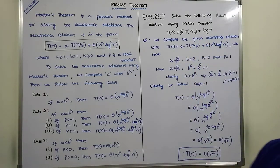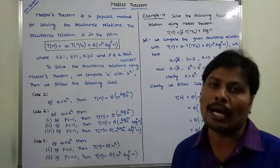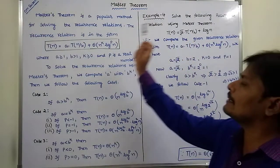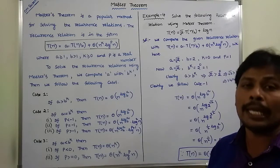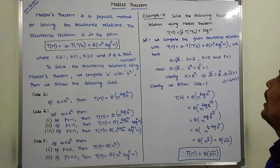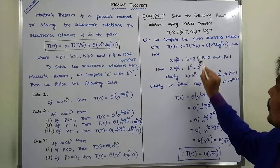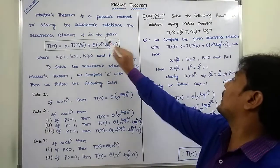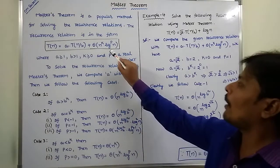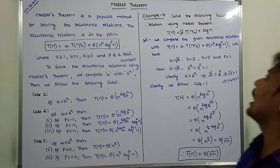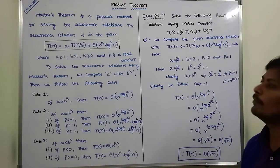This given recurrence relation is compared with the standard recurrence relation in Master Theorem. After comparing, we identify the values of a, b, p, and k. Here, a = √2, b = 2. Since there is no n^k term, k = 0. For the log^p(n) term, p = 1.